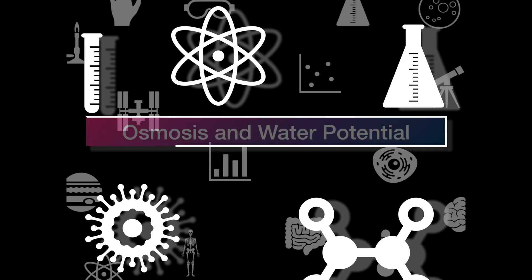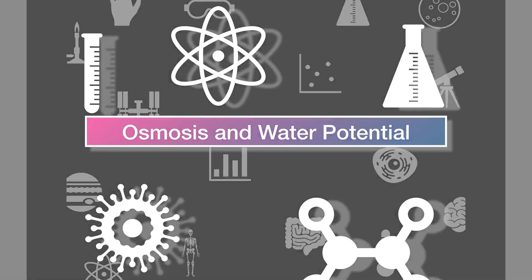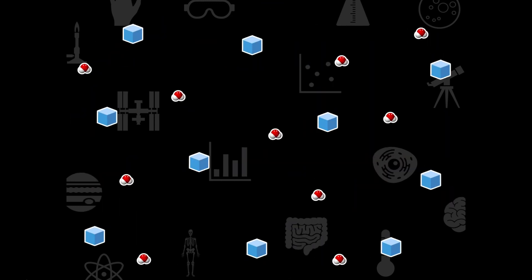This is the next video on osmosis and water potential. I want to think about a hypothetical scenario: I have salt and water and I'm going to allow them to diffuse. What should this look like after diffusion? Remember, diffusion means particles want to spread out as far as they possibly can from each other, so they spread out evenly in the medium.